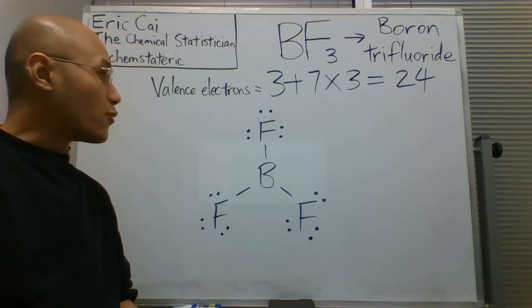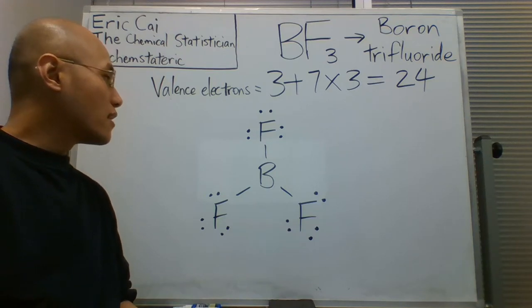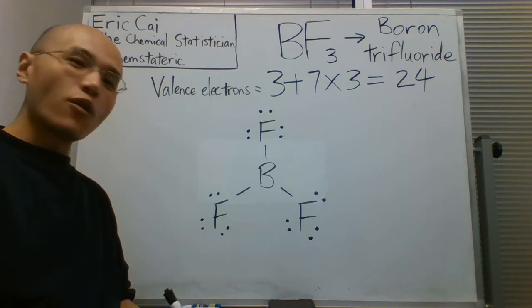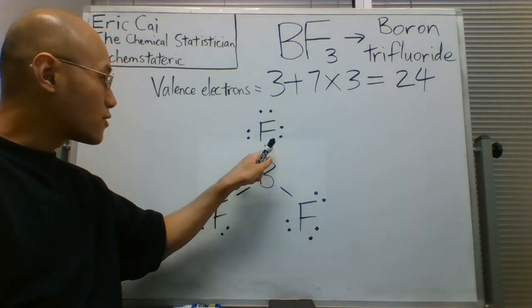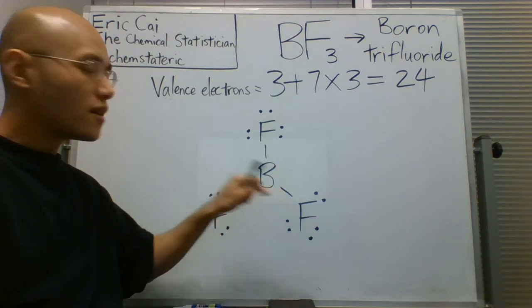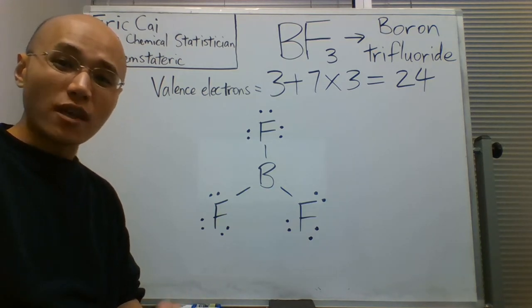Now, we have distributed all 24 of those electrons, but boron does not have eight electrons around it and has only six. You may think that this is a problem, but actually it's not.